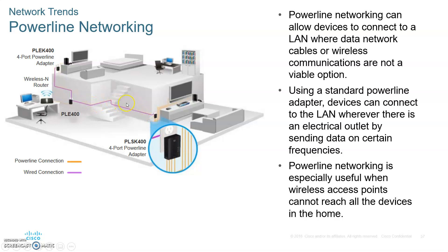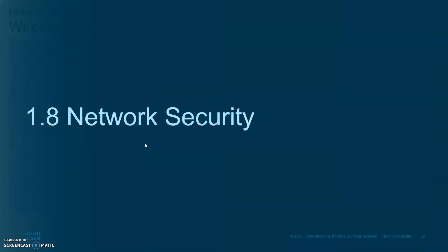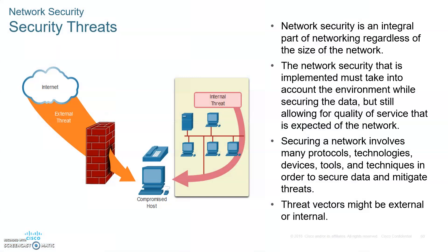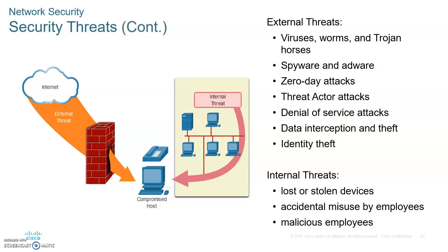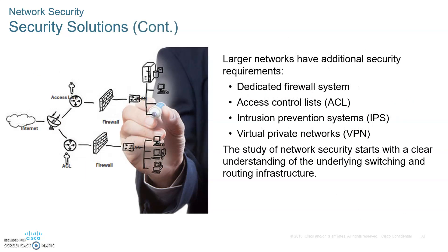Powerline networking allows you to use your home's electricity wiring to pass data without running new wires, but only if devices are on the same circuit board. It's not widely used, but if your wireless router is in an inaccessible place, powerline is a quick solution. For wireless broadband, network security is extremely important — you want your firewall well set up. We'll talk about security solutions including IPS systems and VPN systems, everything you need to connect to a network.